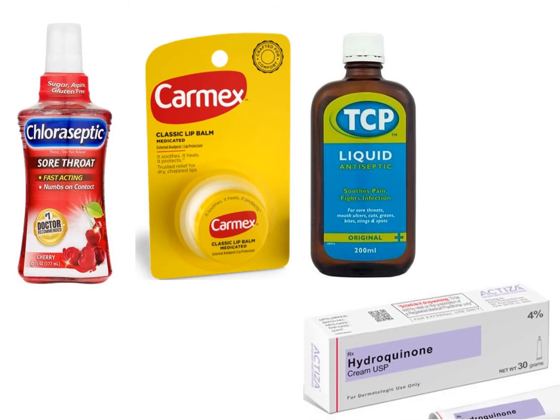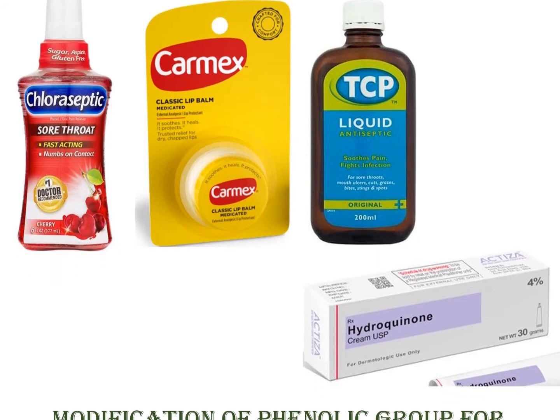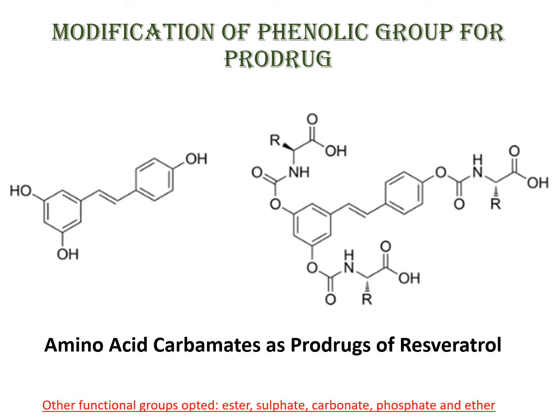These are popular brands: Carbex, Chloroseptic, TCP, Hydroquinone, and Evendol. Phenol groups are also a preferred choice to convert drugs into prodrugs. Prodrugs are a form used to overcome problems associated with drugs, like solubility problems, bioavailability problems, or stability problems.